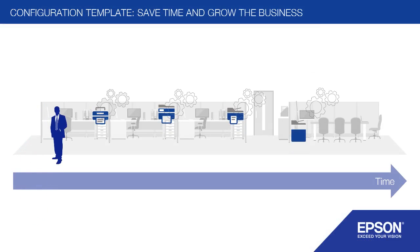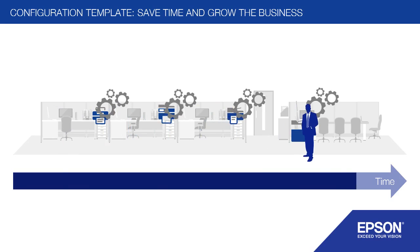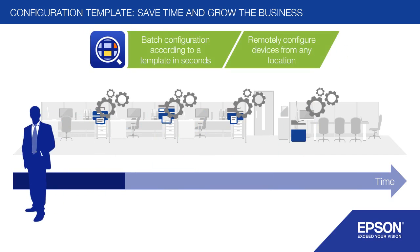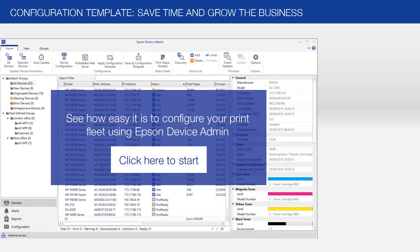One of the most time-consuming tasks for an IT manager is setting up a new fleet of printers. To take our example from before, our new Paris-based IT manager needs to set up each of the 100 new printers manually. This is time-consuming and highly costly for a company. But Epson Device Admin turns this costly and tedious task into a few clicks of a mouse. With the Epson Device Admin configuration template, all you ever need to do is set up one device. You can then copy the settings into the template and apply them to the rest of the printers in your fleet. This means our IT manager in London can choose one of the devices in his fleet and a few minutes later all the units in Paris are configured to the same settings. This makes it easy to expand a print fleet and grow it as the business grows.